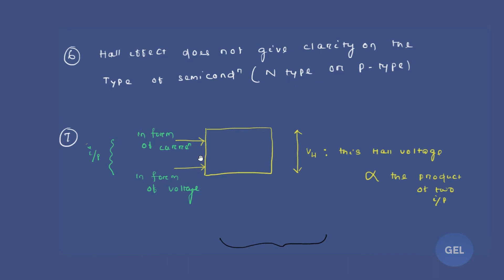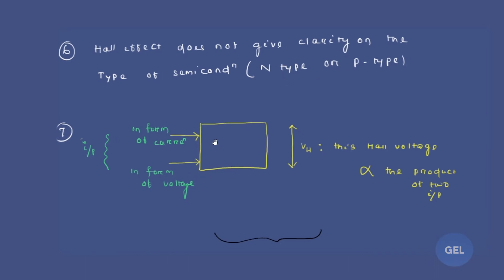Now there is one very simple point here. If this is a specimen, this is your device on which we are doing the experiment. These are the inputs: one is in the form of current and another is in the form of voltage. And the Hall voltage at the output side that we are getting in terms of output, that is the Hall voltage.